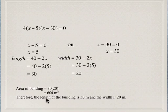Therefore, the area of the building is 30 times 20, which equals 600 square meters — exactly the maximum allowed area. The length of the building is 30 meters and the width is 20 meters.